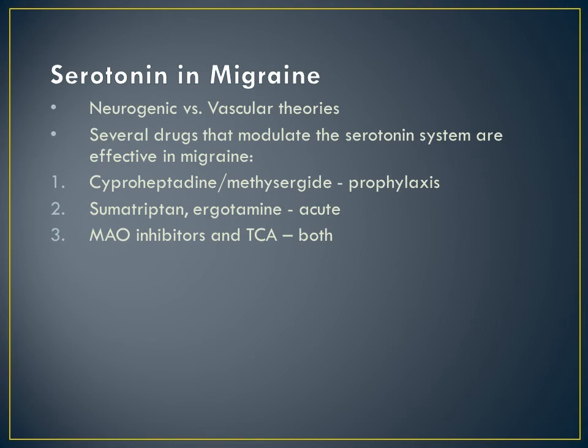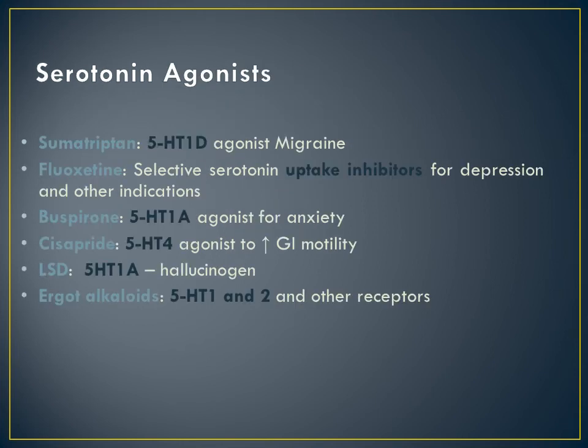Ciproheptadine and methisargide are used in prophylaxis; sumatriptan and ergot alkaloids are used in acute attack. MAOs and TCAs are both used in acute and prophylaxis. The slide on serotonin agonists is very important and contains many MCQ points, covering drugs like buspirone for anxiety, ergot in ANS, lysergic acid in drugs of abuse, and fluoxetine in antidepressants.